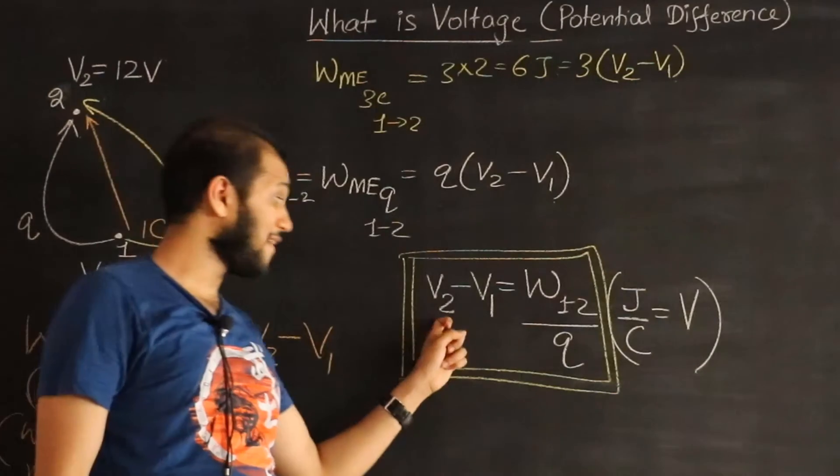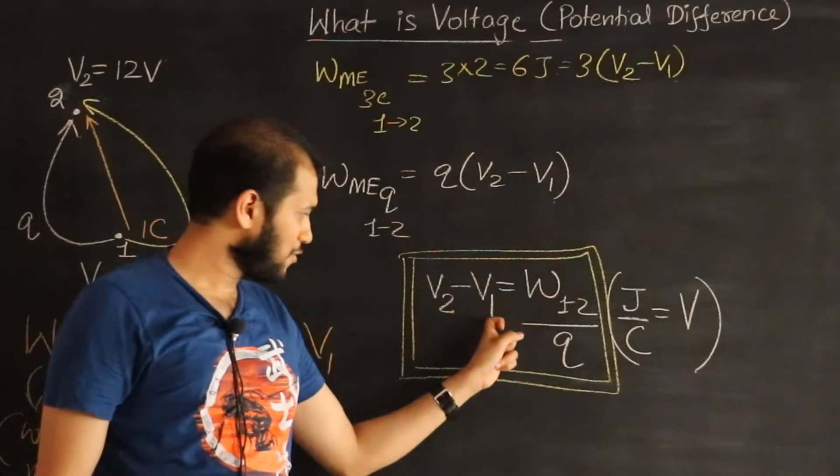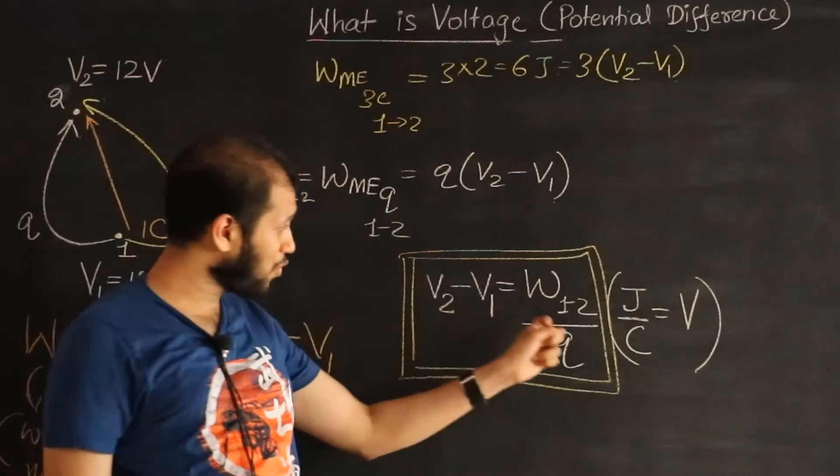Since the difference in potential, it's the final potential, the potential at the final point minus the potential at the initial point. Because we are moving the charge from 1 to 2.